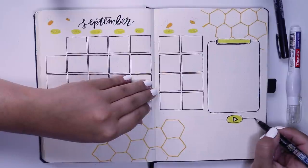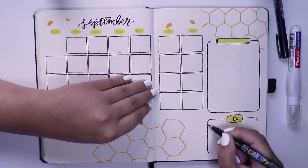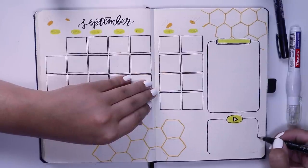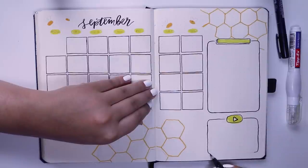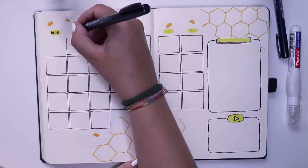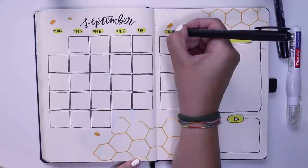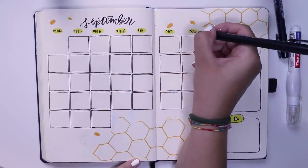For pretty much everything else in my bullet journal, I mainly just use my Tombow Fudenosuke pens. Then I went in and wrote in the days of the week at the top, and started decorating and adding all the details in my bees that I drew out around the page.